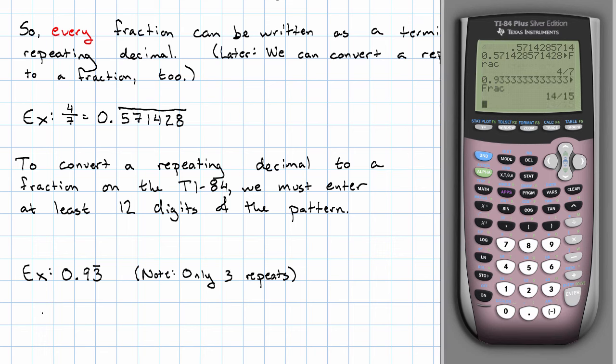2 fraction. 0.93 repeating equals 14 fifteenths. In order to confirm that, I could just say 14 divided by 15. There I see 0.93 repeating. Or if I was not trusting my calculator, I could do that long division by hand and see the pattern.